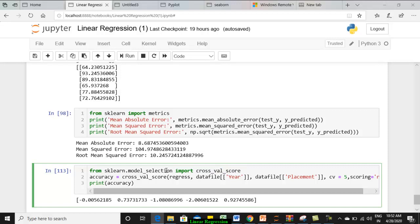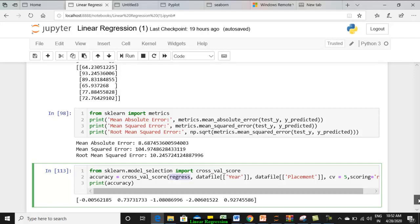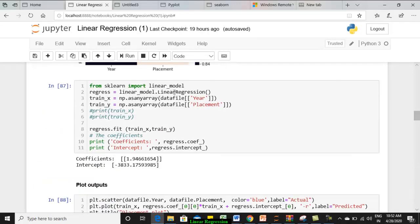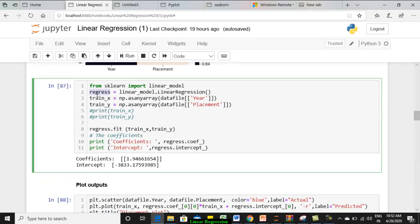Now, to that we are passing the fitted model. What is the fitted model? It is a regress, the name of the fitted model. So regress is the name of the model that we have fitted.